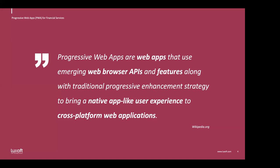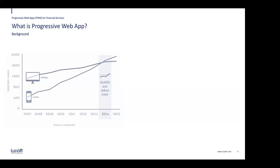Before we understand what those web browser APIs and features are, and what a native app-like experience means, we need a bit of background history. Mobile is actually the key factor driving the internet revolution — we use more mobile devices these days than desktop computers, and it's been this way since 2014.